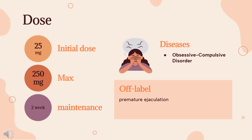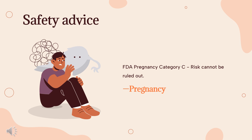Other indications and uses (off-label): Premature ejaculation. Safety advice — U.S. FDA Pregnancy Category C: Animal reproduction studies have shown an adverse effect on the fetus, and there are no adequate and well-controlled studies in humans, but potential benefits may warrant use of the drug in pregnant women despite potential risks.